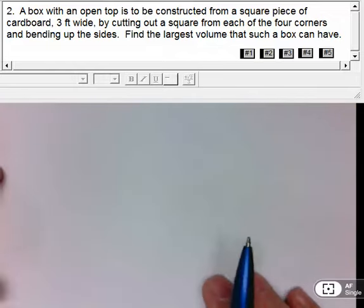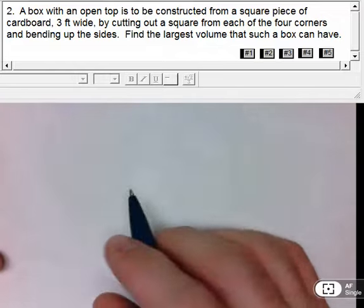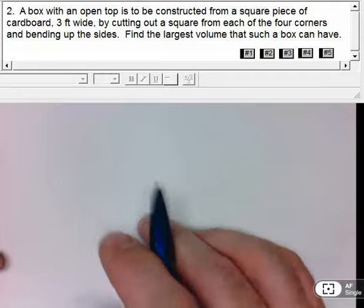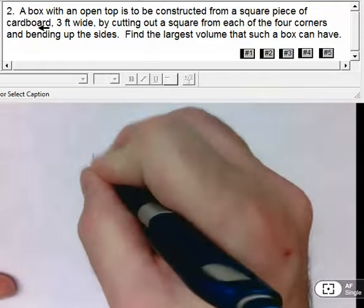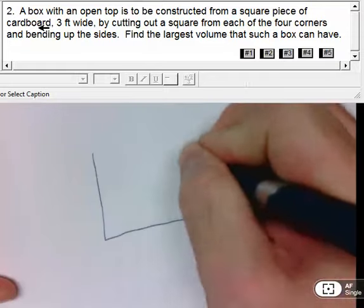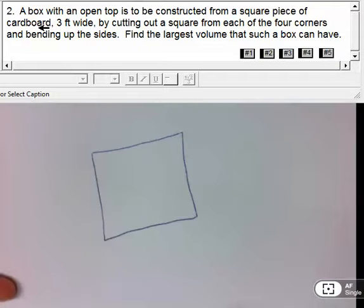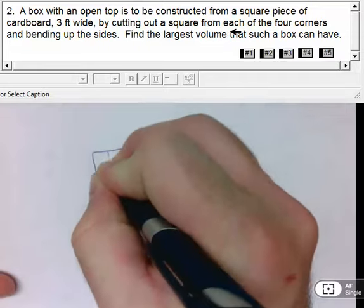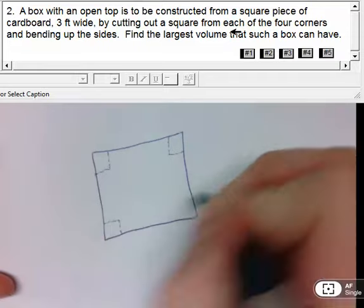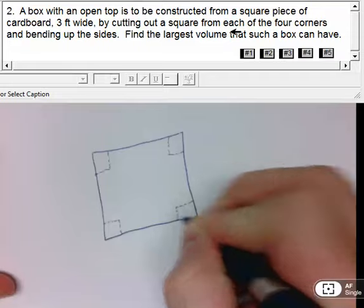Howdy folks, here's another video with another example of how to do an optimization problem. This time we've got a box with an open top to be constructed from a square piece of cardboard. I've got a square piece of cardboard, and I'm going to cut squares off of each of the four corners. I'm basically cutting off some portion of this. You've seen problems like this before, but we're going to do something with it that you might not have done before.